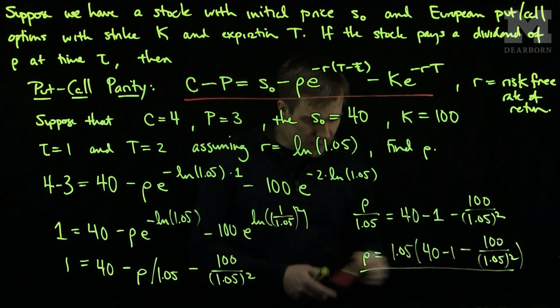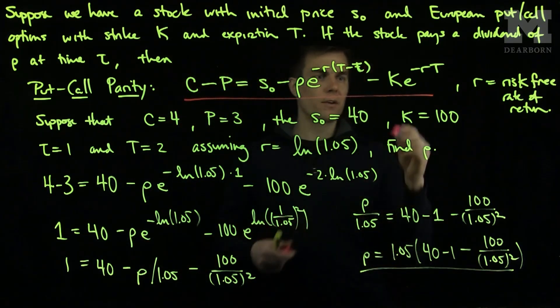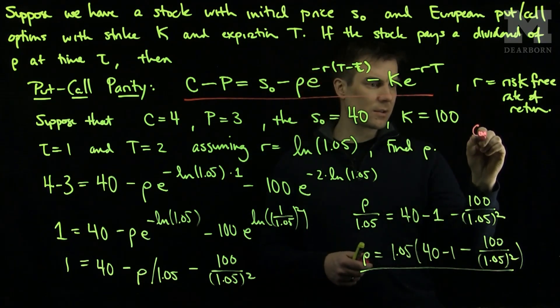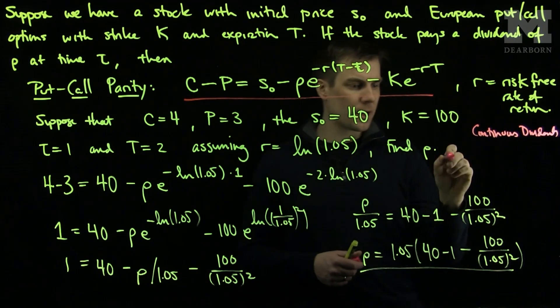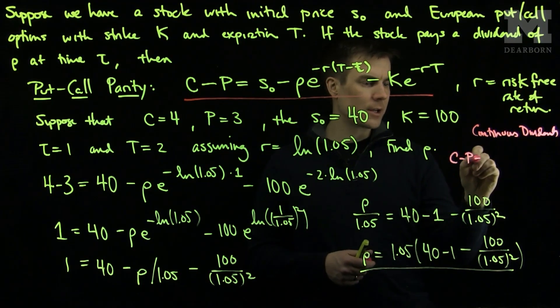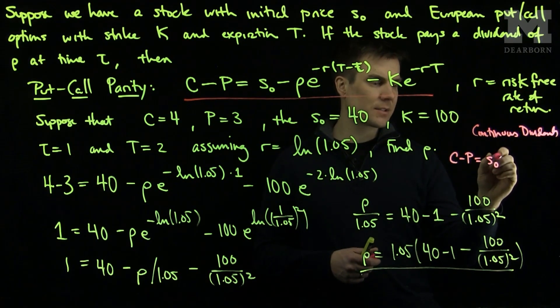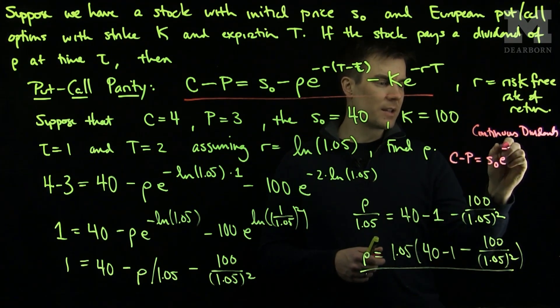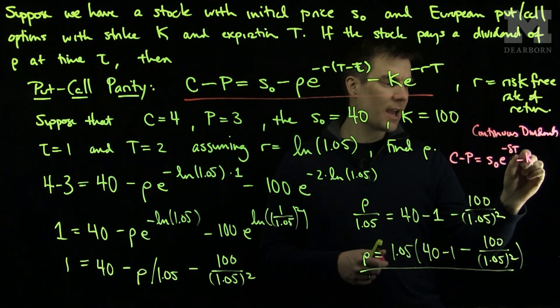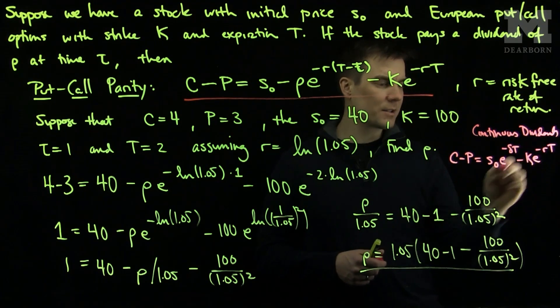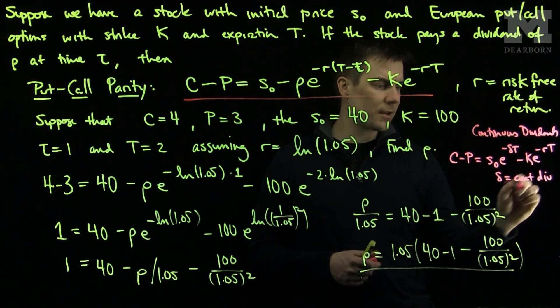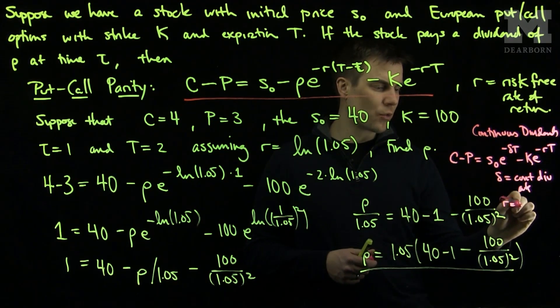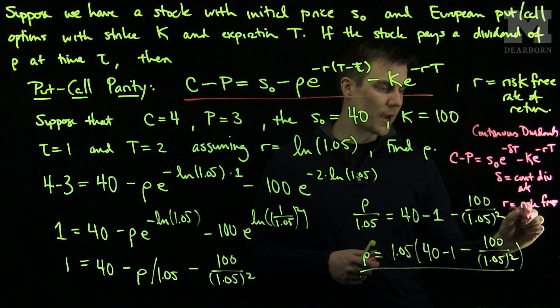Now, it should be noted that there is a variation of this. The variation for continuous dividends in put-call parity is: call minus put equals S0 e to the negative delta t minus K e to the negative rt, where delta is the continuous dividend rate and r is the risk-free rate.